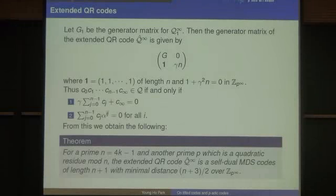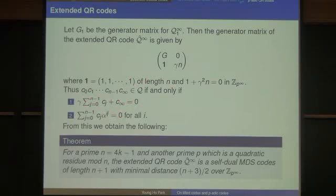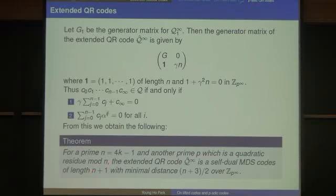If you know the universal idempotent for the p-adic code, you can take that polynomial and reduce modulo p^e to get all the idempotent generators at once. We can extend the quadratic residue code by adding one coordinate. By two conditions, for prime n equals 4k minus 1 and another prime p which is a quadratic residue mod n, the extended QR code is a self-dual MDS code of length n+1 with minimum distance (n+3)/2. So the minimum distance is quite large — this is an MDS code, and it is the best possible.